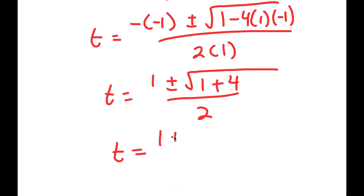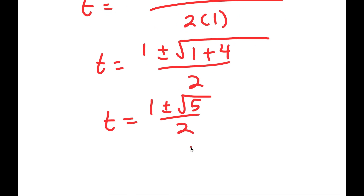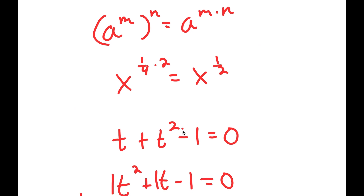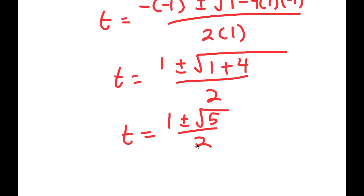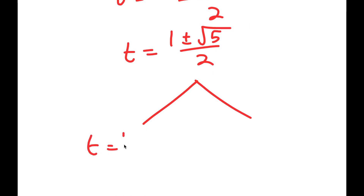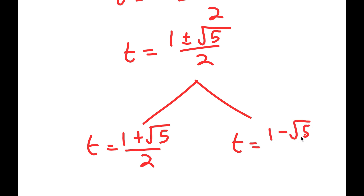This is equal to 1 plus or minus the square root of 5, over 2. So we get two solutions: t equals 1 plus the square root of 5 over 2, and t equals 1 minus the square root of 5 over 2.